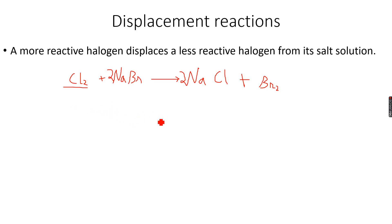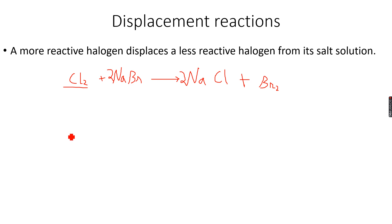We know that as we go down the group, the halogens become less reactive as oxidizing agents and more reactive as reducing agents. The higher the halogen is in the group, the greater its oxidizing ability. The lower the halogen is in the group, the lower its oxidizing ability.